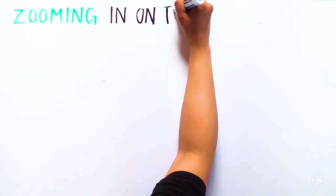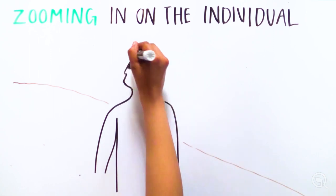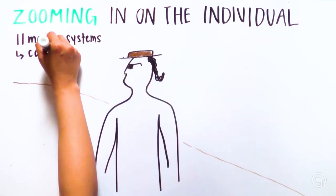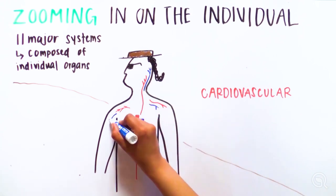Let's zoom in and look at the structure function relationship within an individual. Her body is composed of 11 major organ systems, including cardiovascular, musculoskeletal, and respiratory systems.